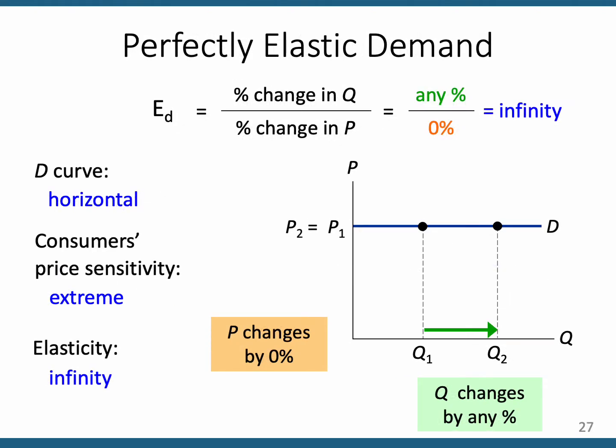This is as flat as you can get — perfectly horizontal. That is perfect elasticity. We're going to come back to this in chapter 8, when we talk about pure competition for the individual firm selling in a perfectly competitive market. Their demand curve looks horizontal.